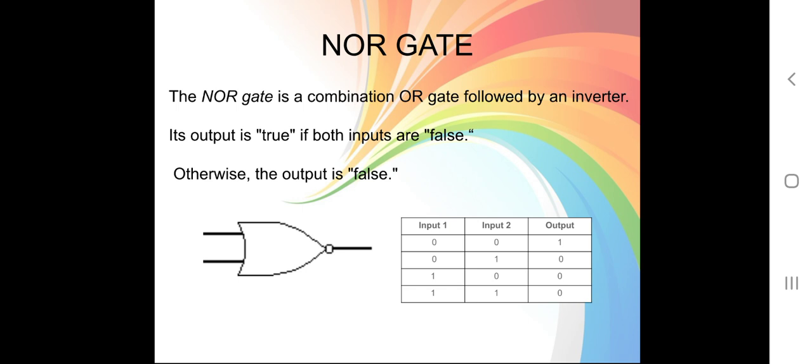For the NOR gate truth table: if the first input is 0 and the second input is 0, the final output is 1. If the first input is 0 and the second input is 1, the final output is 0. If the first input is 1 and the second input is 0, the final output is 0. If the first input is 1 and the second input is 1, the final output is 0.